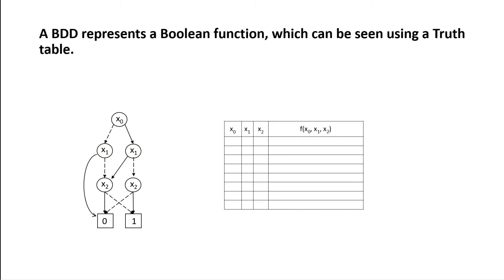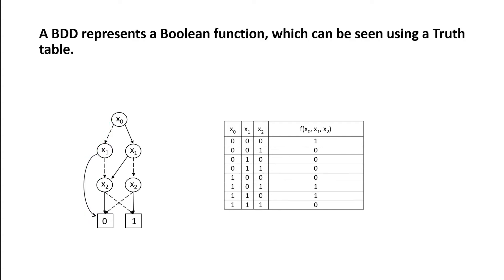Binary decision diagrams are closely related to Boolean functions — they can actually represent Boolean functions. We'll see this demonstrated by a truth table first. Our BDD has eight paths in it. Walking through the binary decision diagram will fill the truth table. Of course you can go the other way as well, going from a truth table and creating a binary decision diagram based on that.